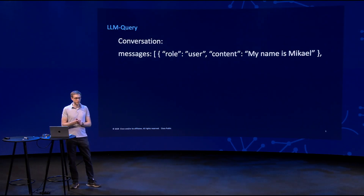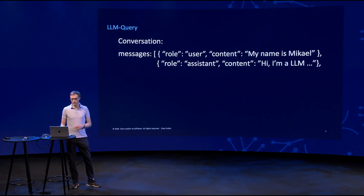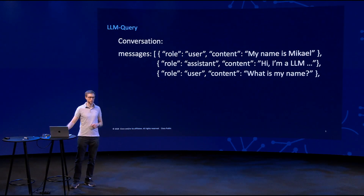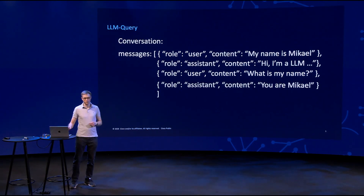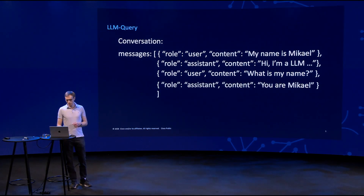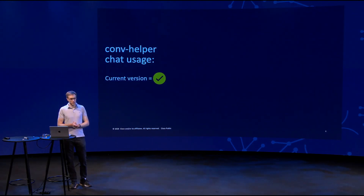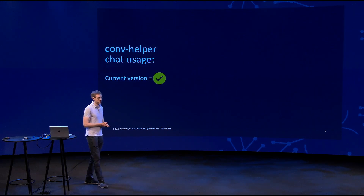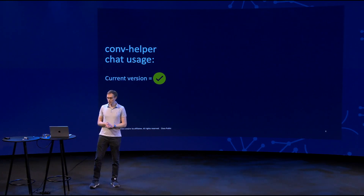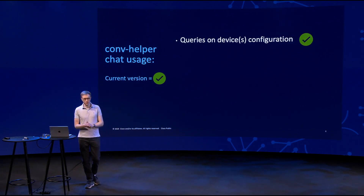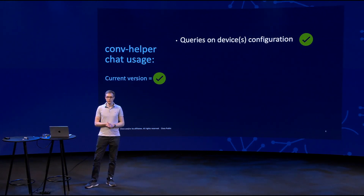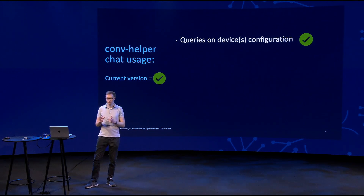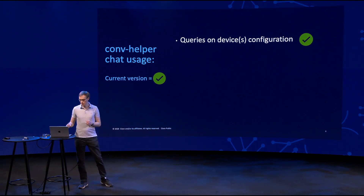For basic conversations, you feed information, you get something back, then you ask based on the previous messaging. We have a handy conversation helper action in the LLM query package. Currently we support queries on device configuration — you just feed a list of devices, and you automatically get the running config pushed into the conversation, and based on that you can have a query.